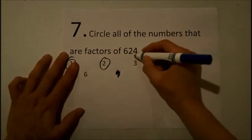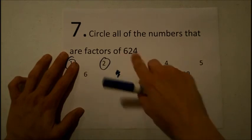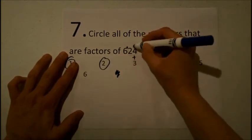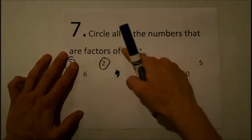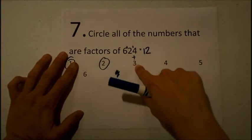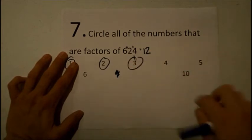3 is the number where you will add up each of the digits and find out if the sum is divisible by 3. So 6 plus 2 plus 4, that would be 8 plus 4, is 12. 12 is divisible by 3, so the whole number is divisible by 3.